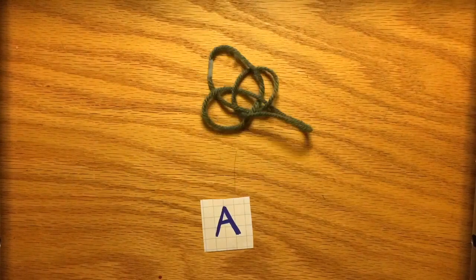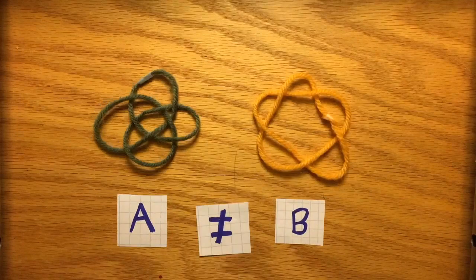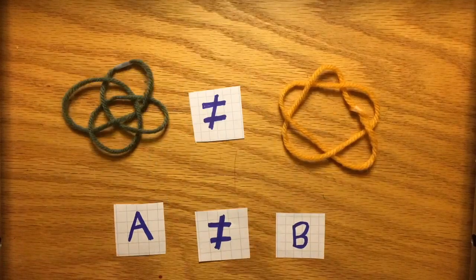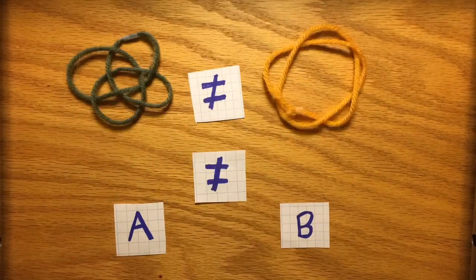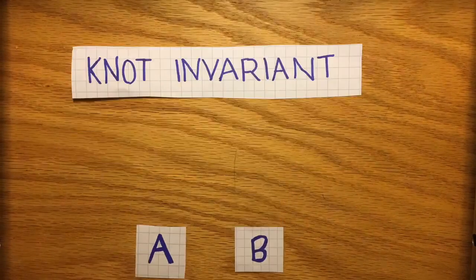If we had some characteristic of a knot that never changes, no matter what moves you do to it, then we could see if two knots share that characteristic. If they don't, then the knots have to be different. This characteristic, called a knot invariant, would allow us to prove that two knots are different.